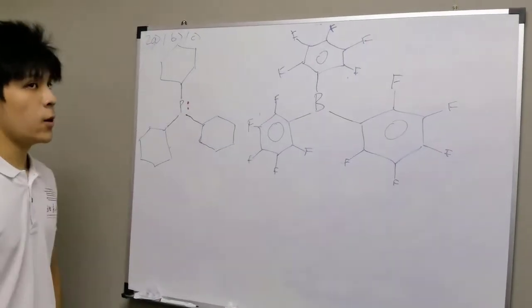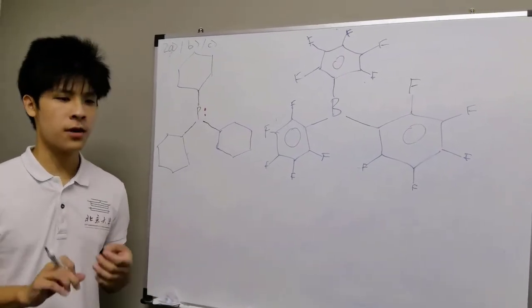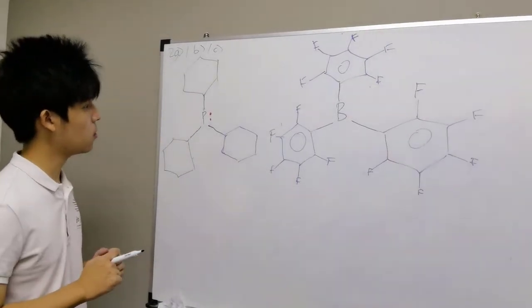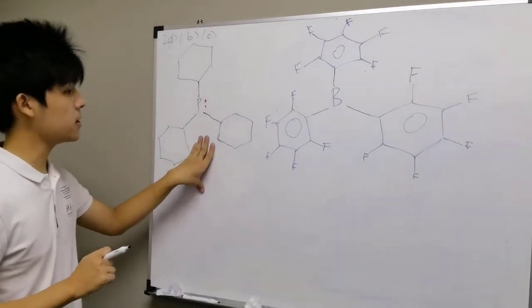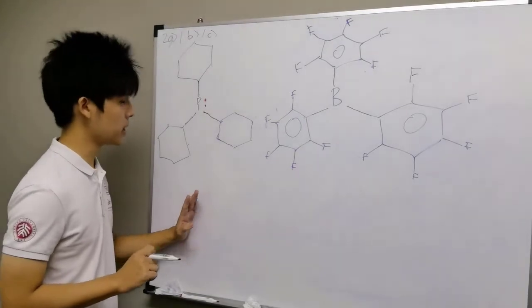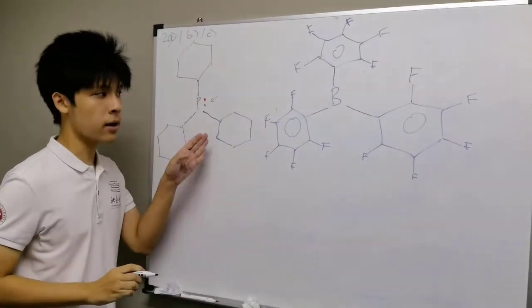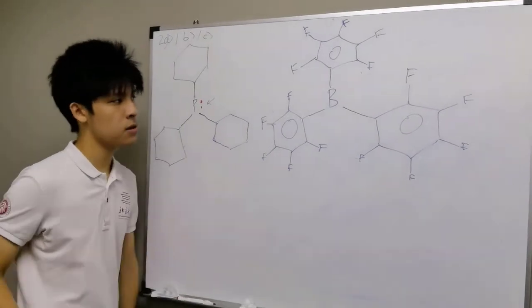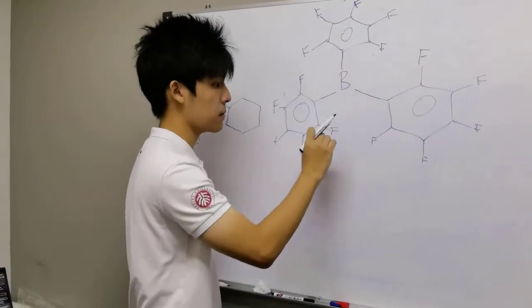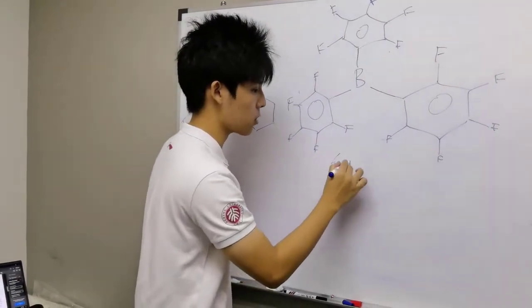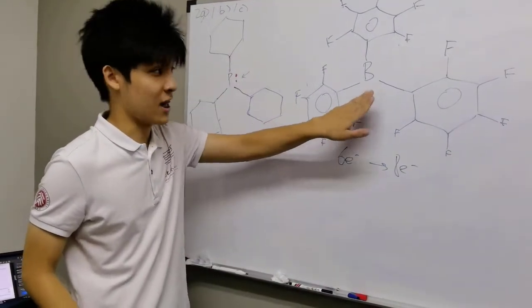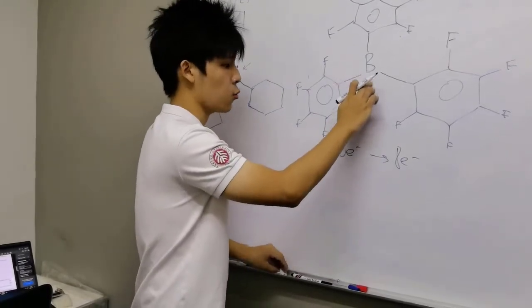Now we can move on to question 2, where we are looking at iron hydrogenase and the role frustrated Lewis pairs play in its catalysis. The first question asks why phosphines are good Lewis bases and boranes are good Lewis acids. Phosphines are good Lewis bases because they have a lone pair, and this electron pair could be donated to a Lewis acid. Borane is a good Lewis acid because borane has only 6 electrons around it, but needs 8 electrons for a stable octet configuration, making it electron deficient — therefore a good Lewis acid.